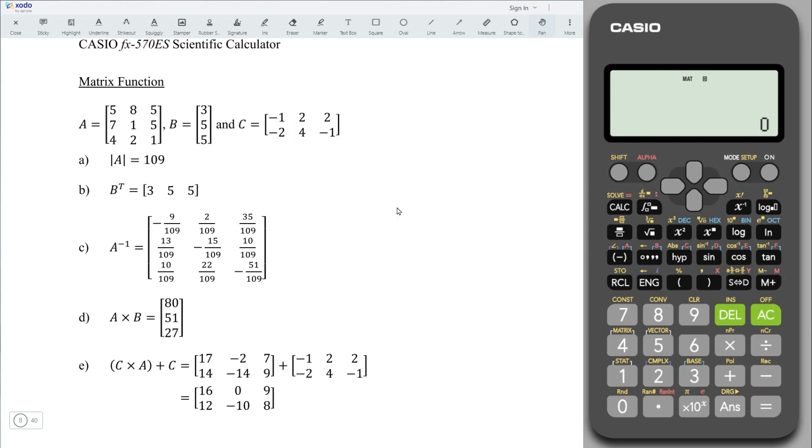And we can now perform calculations. For part A, determine the determinant of matrix A. Press on shift 4. We need determinant, which is 7. Shift 4 again. And select matrix A, which is number 3. Press on equal. And we should obtain the correct value.